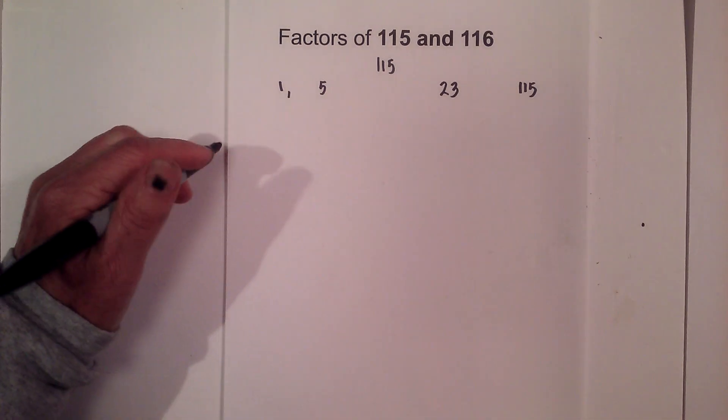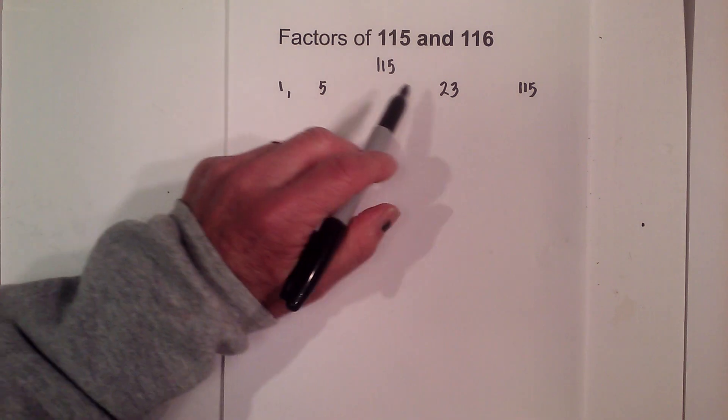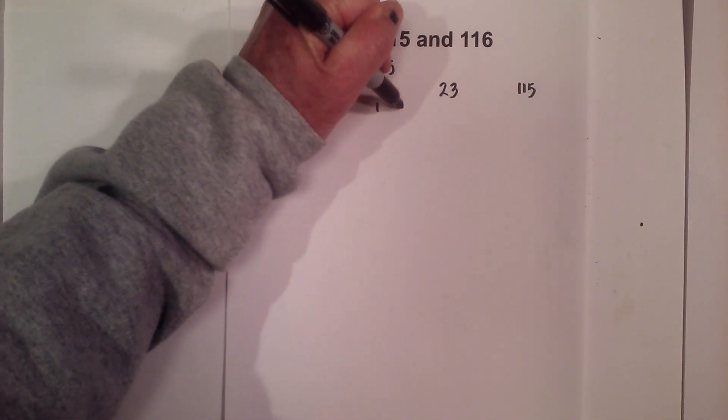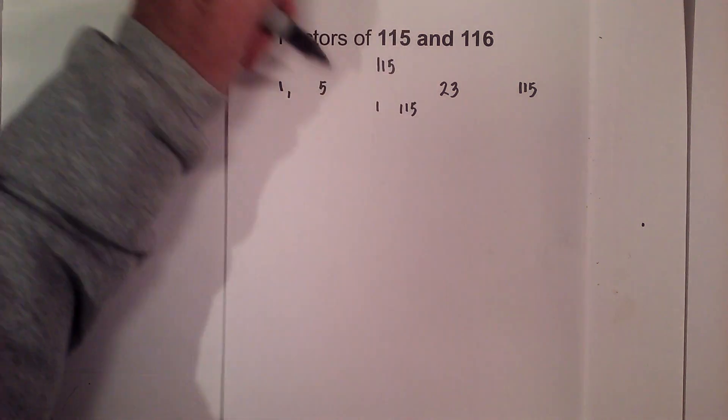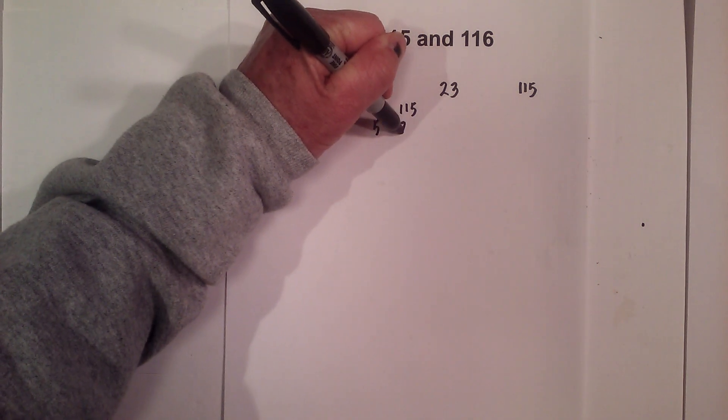So the factors of 115 are 1, 5, 23, and 115. And if you like them in pairs, it's 1 times 115, 5 times 23.